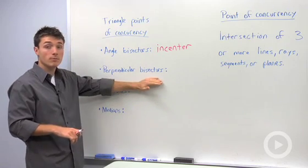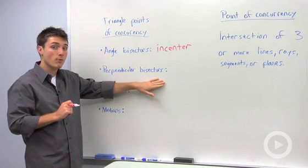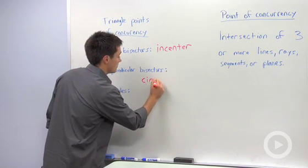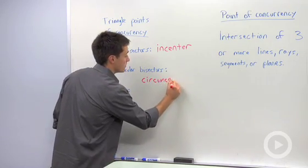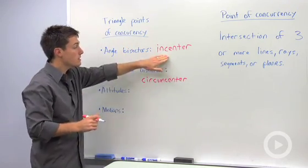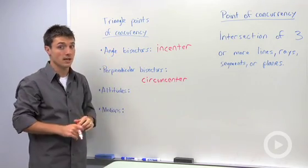If you construct the three perpendicular bisectors of each side, you find the point of concurrency called the circumcenter. The circumcenter is like the incenter, except the circumcenter's circle intersects the three vertices, not the three sides.